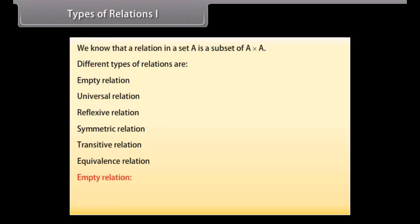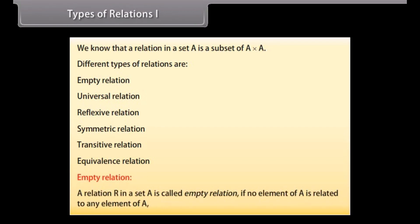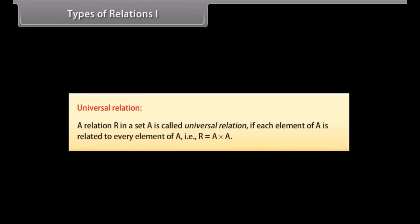Empty relation: A relation R in a set A is called empty relation if no element of A is related to any element of A. That is, R is a subset of A cross A. Universal relation: A relation R in a set A is called universal relation if each element of A is related to every element of A. That is, R is equal to A cross A.